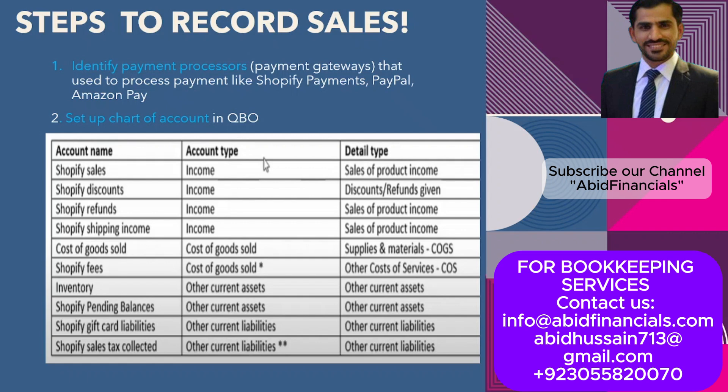Material cost should be recorded under Cost of Goods Sold — you may rename it as 'Cost of Goods Sold' or use 'Material Cost' as a heading. Its detail type would be 'Supplies and Materials.' Shopify fees would also be part of Cost of Goods Sold, depending on your policy — you may categorize them as processing fees or other fees.